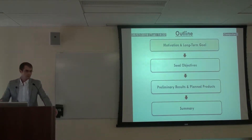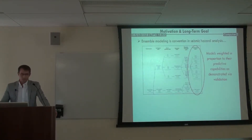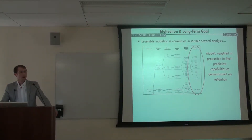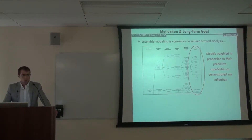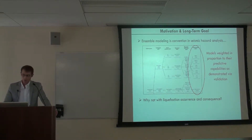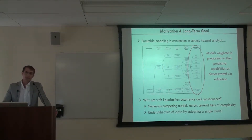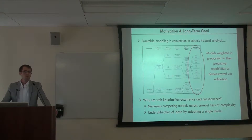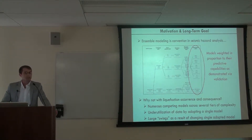Regarding the larger motivation, you're probably already familiar with ensemble models, even if you haven't thought about it, because we use ensemble modeling within seismic hazard analyses. Within a logic tree we use multiple GMPs and weight them based on past performance, which begs the question of why don't we do this with liquefaction. After all, we have numerous competing models across several tiers of complexity, and generally we just pick one — essentially neglecting data underlying the models we haven't chosen, potentially leading to large swings in predictions.